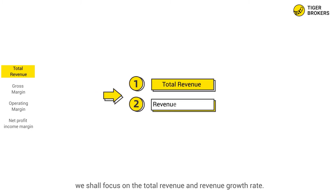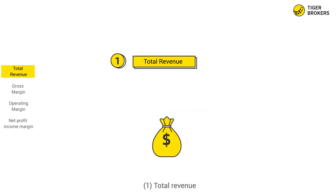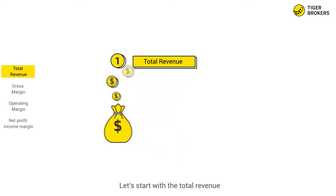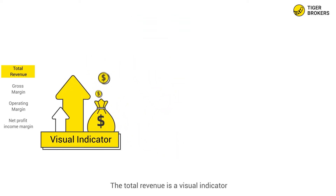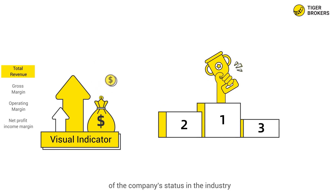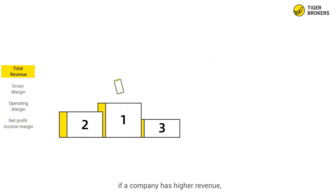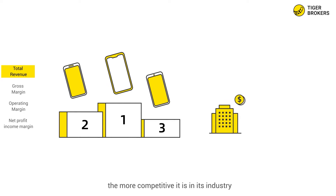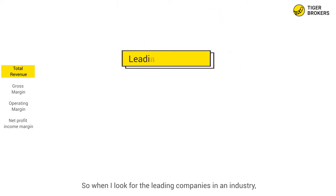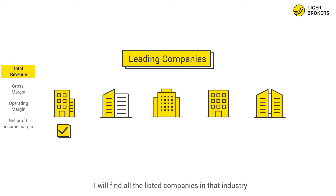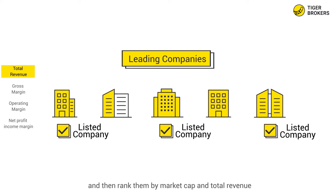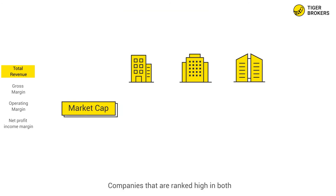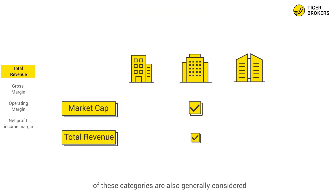Total revenue is a visual indicator of the company's status in the industry. Generally speaking, if a company has higher revenue, the more competitive it is in its industry. So when I look for the leading companies in an industry, I find all the listed companies in that industry and rank them by market cap and total revenue. Companies that rank high in both categories are generally considered to have a competitive advantage.